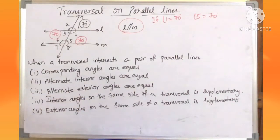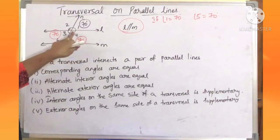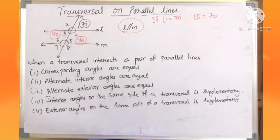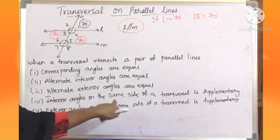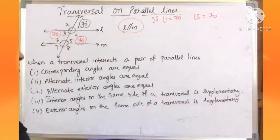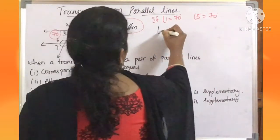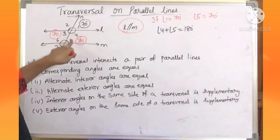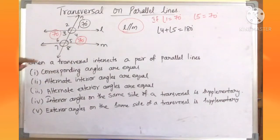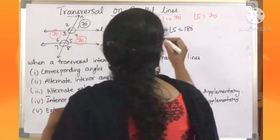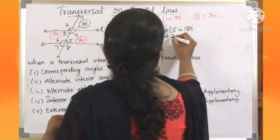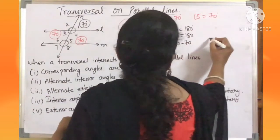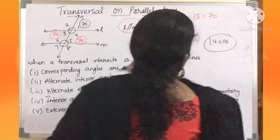Similarly, for interior angles on the same side: suppose angle 5 is 70, then what is angle 4? Angles 4 and 5 form interior angles on the same side of a transversal, and the property is that they are supplementary — meaning angle 4 plus angle 5 equals 180 degrees. Also angle 3 plus angle 6 is 180. So angle 4 equals 180 minus 70, which is 110 degrees.